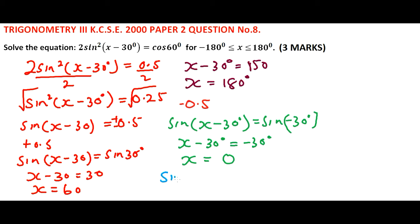Also, the sine of minus 150 is the same as minus 0.5. So sine of x minus 30 degrees equals sine of minus 150. This means x minus 30 degrees is equal to minus 150, so x is equal to minus 120 degrees.